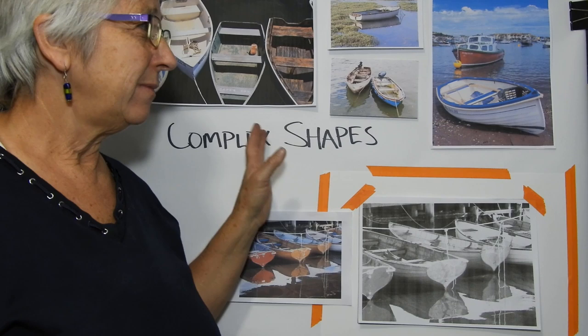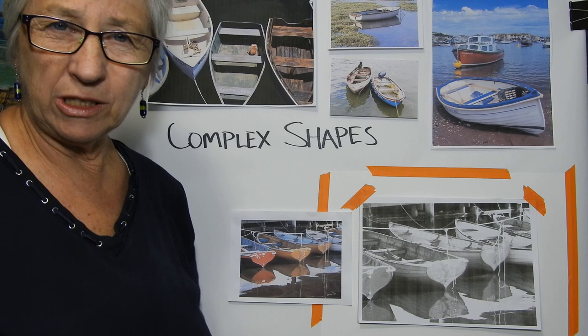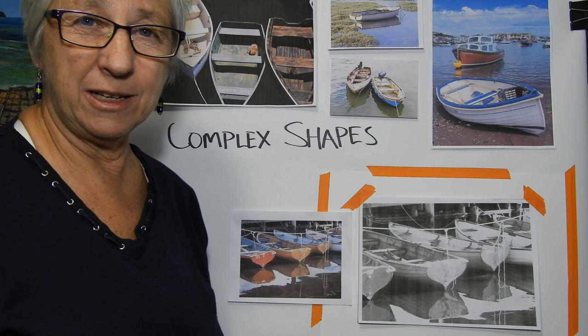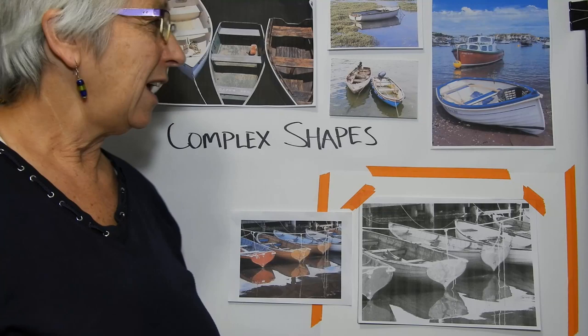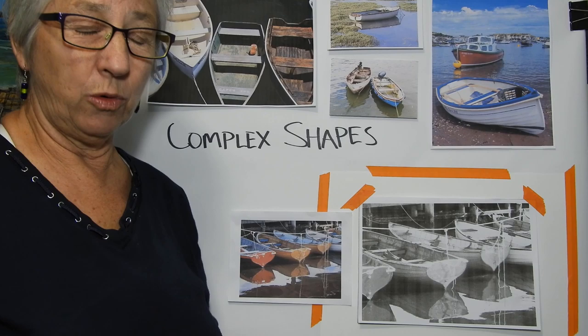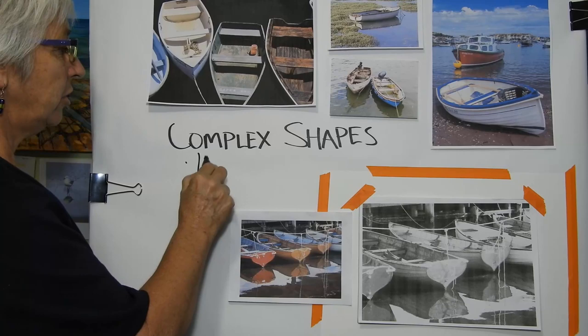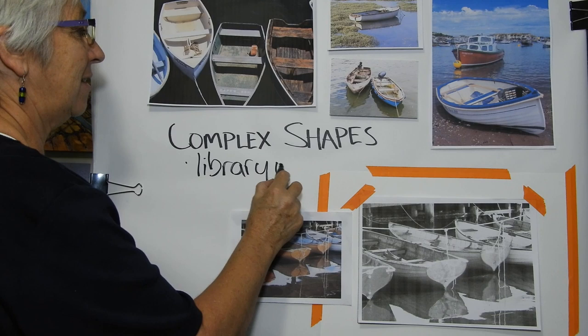The first thing I would say is get yourself lots of references. Get used to looking at boats — go where boats are, look at them on the internet. You can go to Pexels, Pixabay, and WetCanvas and look at copyright-free images of boats. Start building yourself a little library of boats. It's very helpful because then you start to get to know what they look like.